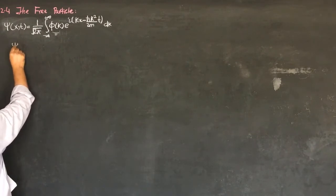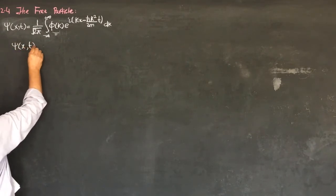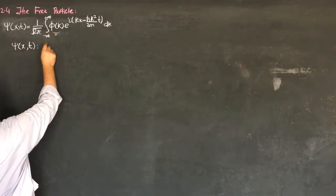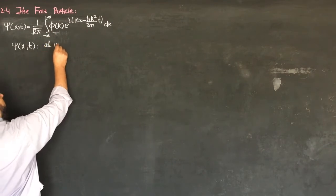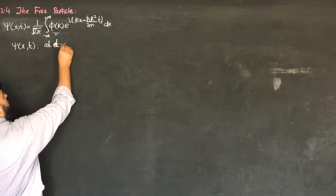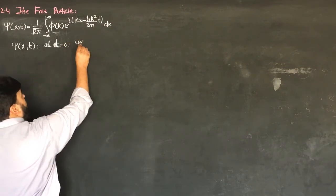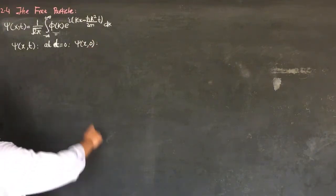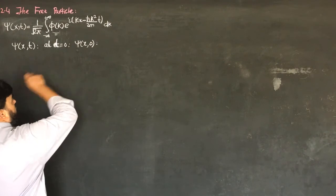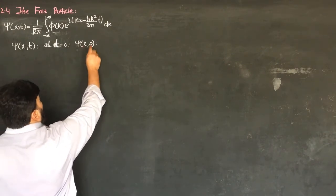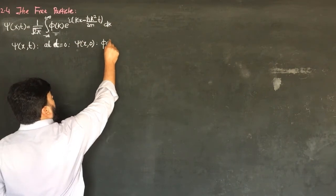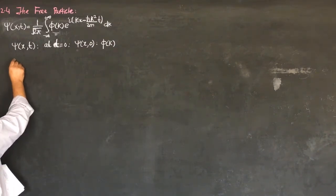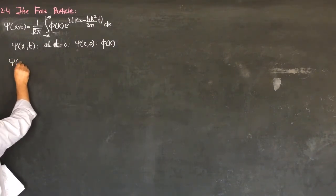In real space, the general solution takes the integral form. For determining phi(k), I consider the case at t equals 0, so the wave function is Psi(x, 0). When time is not changing, the shape of the wave function remains the same. So, for determining phi(k), I will utilize Psi(x, 0) and write the expression for Psi(x, 0).